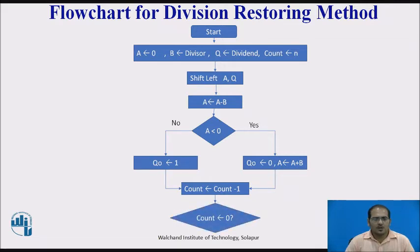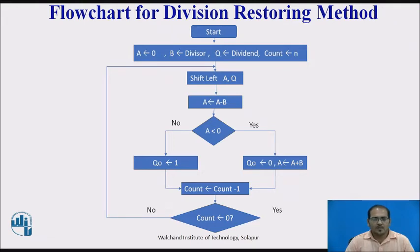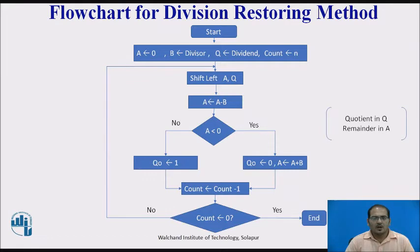If the count value is not equal to 0, the operation repeats from the shift step. If the count value is 0, the operation ends. The quotient value will be in the Q register and the remainder will be in the A register.